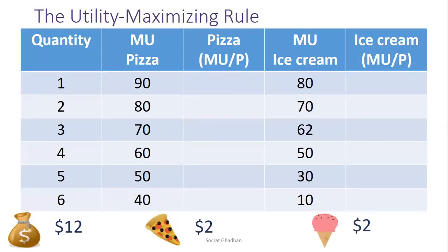Usually, consumers try to spend the limited money they have on what will give them the greatest amount of satisfaction. This is called the utility maximizing rule. The decision rule for utility maximization is to purchase those items that give the greatest marginal utility per dollar spent, and that they are affordable within a certain budget.